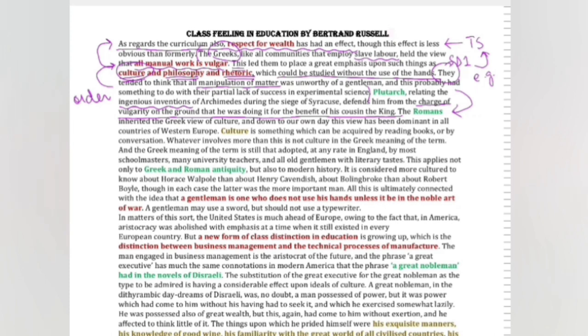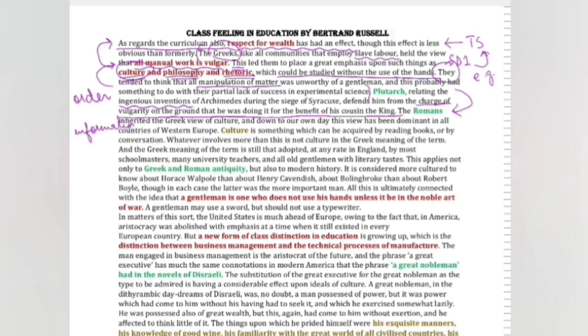Ye defend karne ki zharuat is liye padi kiunke joh manual work tha, manipulation of matter tha, usko vulgar sammzha jatata tha. Yeh wohi concept hai joh ke Aristotle ki writing bhi humme milta hai, ki woh kehta hai ki joh tragedy hai woh superior minds ke liye hai, woh elite ke liye hai, woh aristocracy ke liye hai, jabke comedy joh hai woh vulgar minds ko appeal kerti hai. The Romans inherited the Greek view of culture.